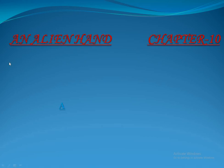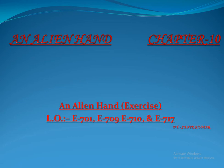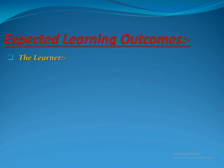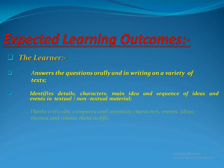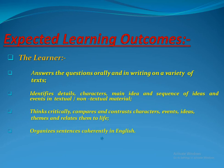Dear children, heartiest welcome in English class. How are you? Hope that all of you are well and safe at your home. Today we will solve the exercise of chapter 10, that is 'An Alien Hand' from your book. These are the expected learning outcomes which will be achieved by us after solving this exercise. We already read and understood the whole chapter in the previous three videos. Today we will solve the exercise of this chapter. Let's start.